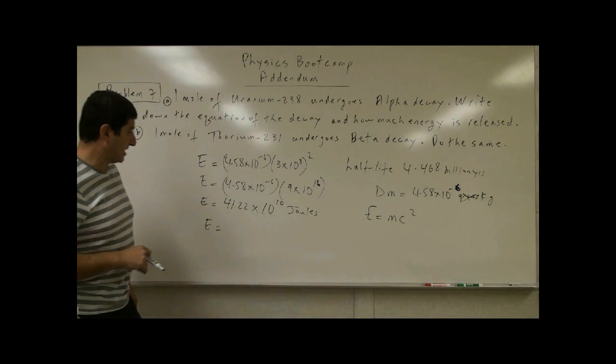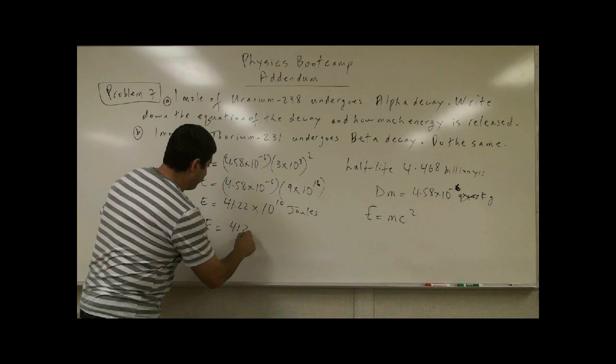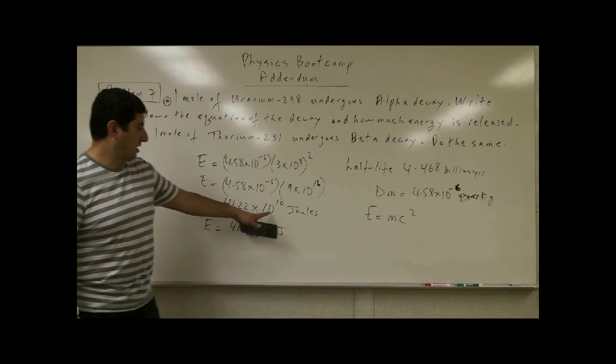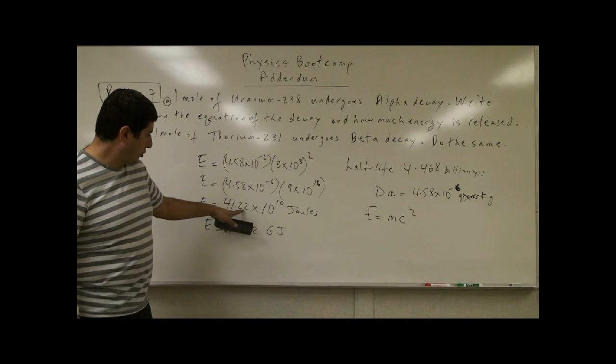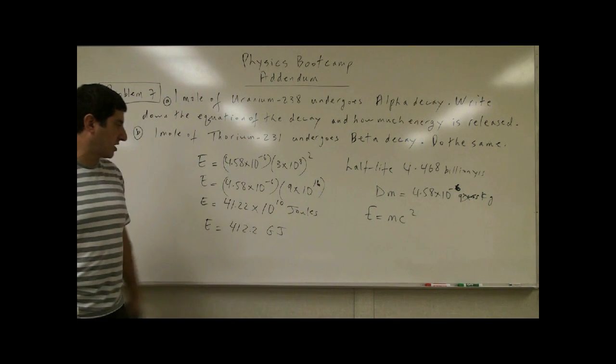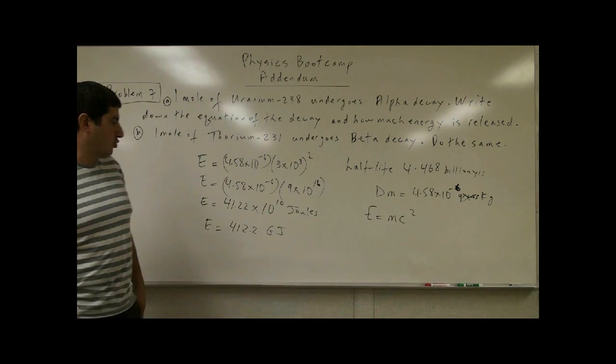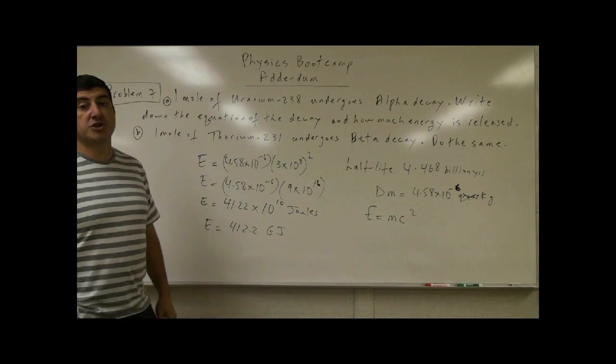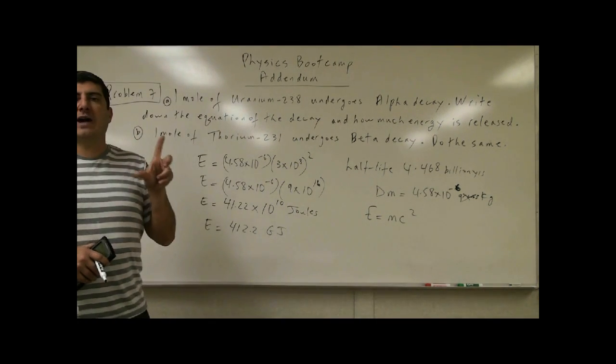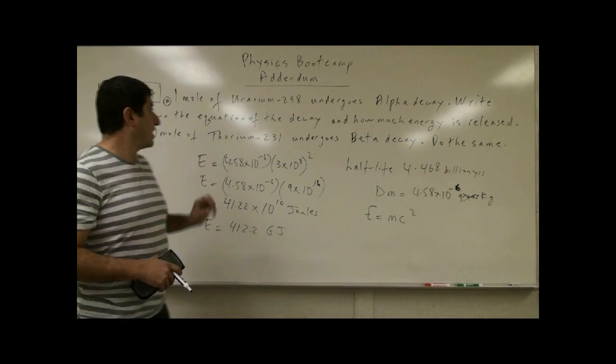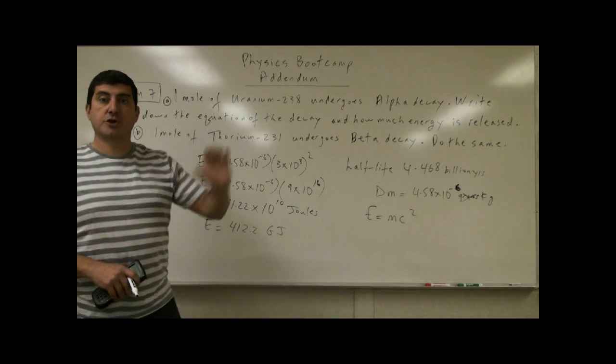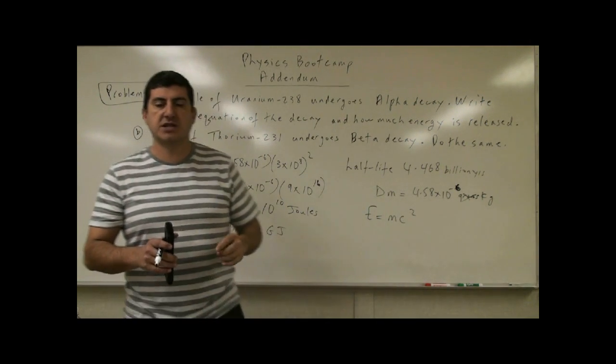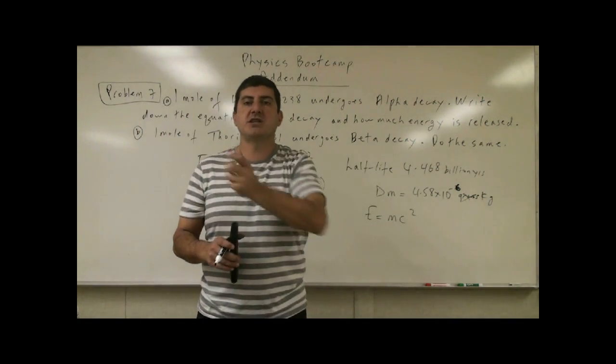We could express this as 412.2 gigajoules. One mole of uranium were to undergo this decay, it would release 412.2 gigajoules of energy. We could also ask the question this way: how about if one atom of uranium undergoes this decay, how much energy is released? Often in tables when you look up online, you will see instead of one mole, you will see it expressed as atom.